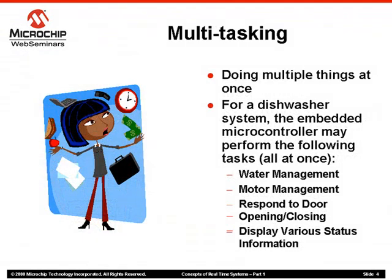Let's talk about multitasking. While zigzagging on a highway with a cup of coffee in one hand and a mobile phone in the other, we are multitasking. In this case, the central intelligent unit in our system — the brain — is managing multiple tasks of driving, drinking, talking, and potentially safely switching lanes all at once. Likewise, in the dishwasher system, the microcontroller may be concurrently managing a variety of tasks such as water manager, motor manager, door manager, display manager, etc.